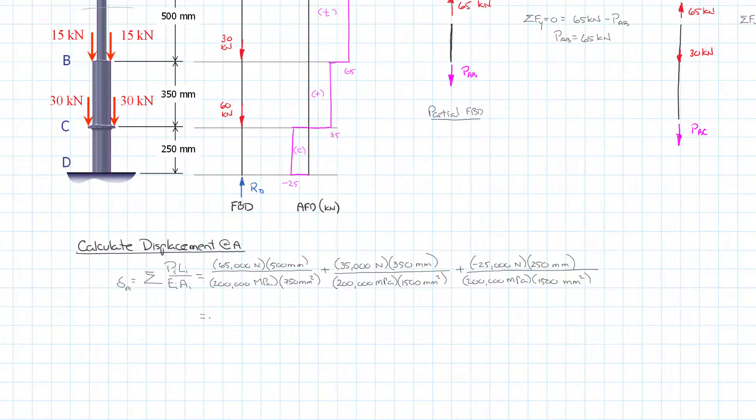You run that through the calculator we get 0.2367 millimeters and that is positive so it's an elongation. Our rod gets longer overall, a portion of it is getting shorter but most of it is getting longer.